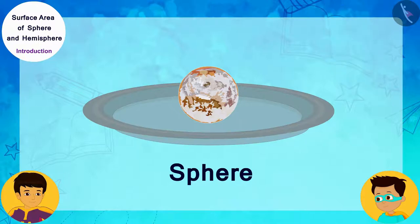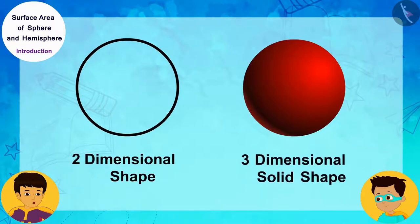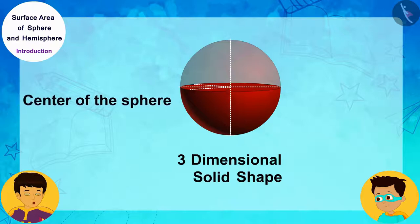Thomas, just like a circle is a two-dimensional shape, a sphere is a three-dimensional solid shape, which is made up of all those points in space which are at a certain fixed distance from a certain fixed point. This fixed point is called the center of the sphere.